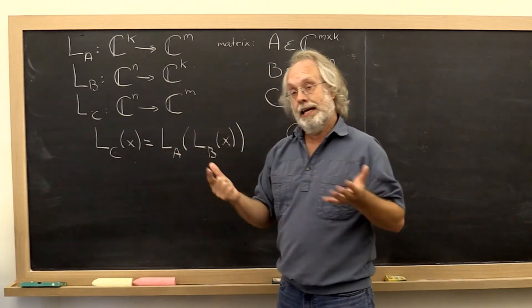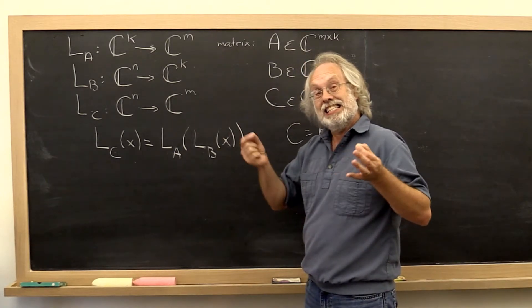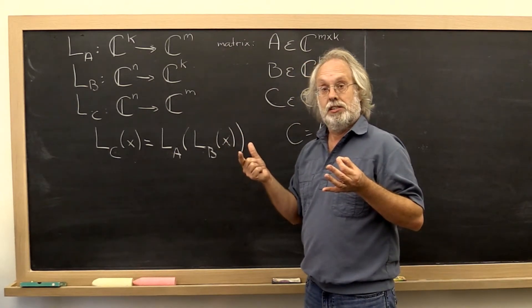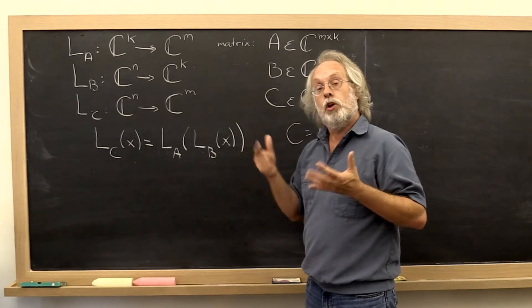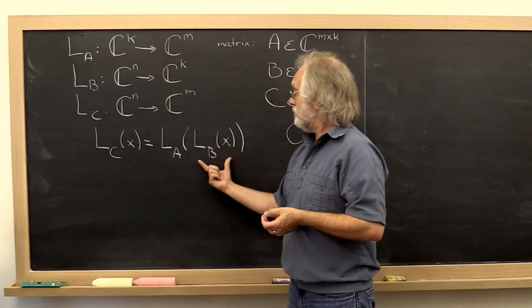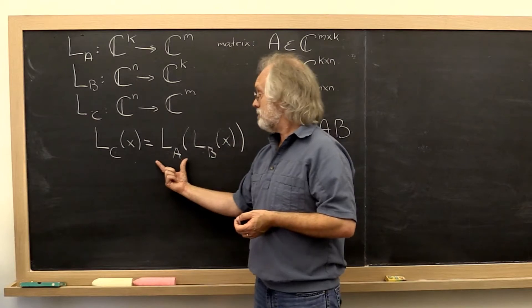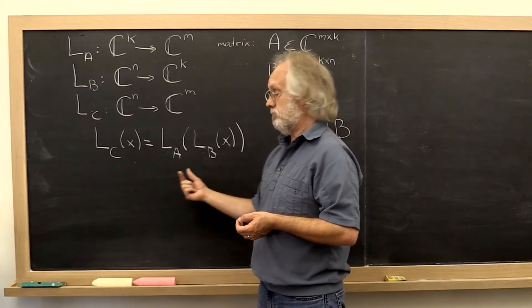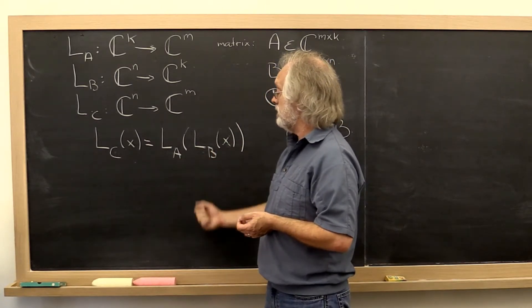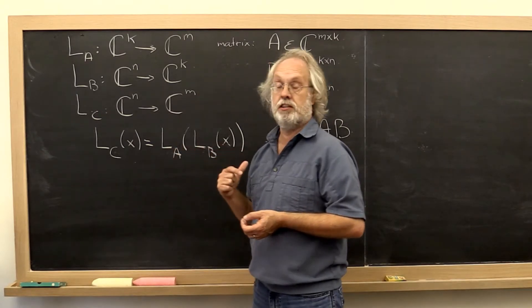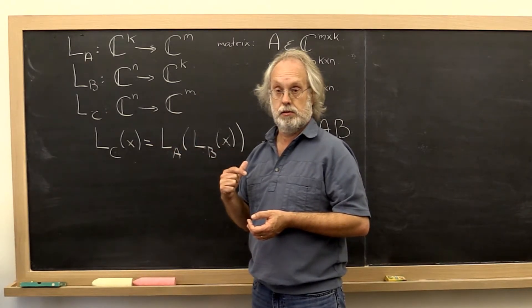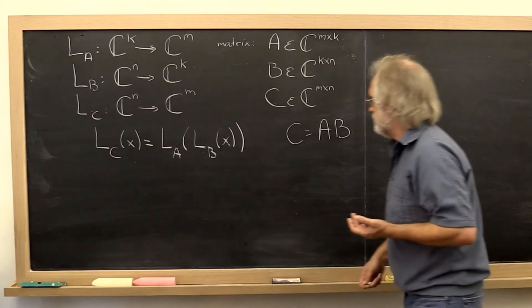What we would like is for the net stretching to be no more than the maximal stretching that B does times the maximal stretching that A does. The maximal stretching that L_B does times the maximal stretching that L_A does. How do we capture that?